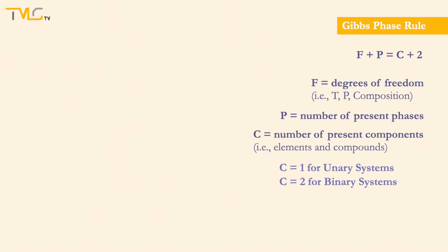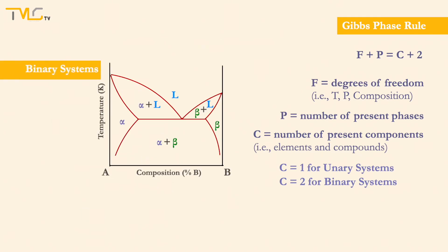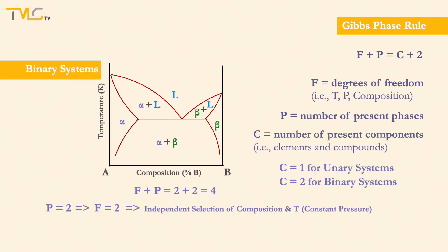For a binary system, F plus P equals 4. Then, for a two-phase region, there will be 2 degrees of freedom, meaning that temperature and composition can be altered independently without causing any phase change at a fixed pressure value.